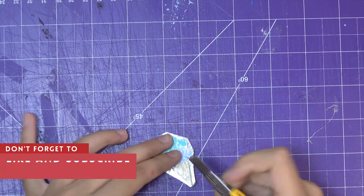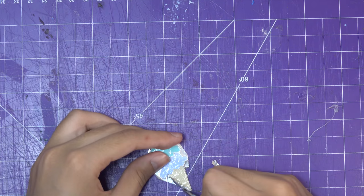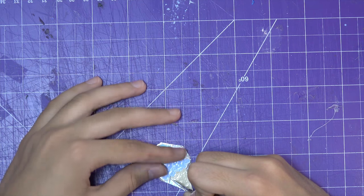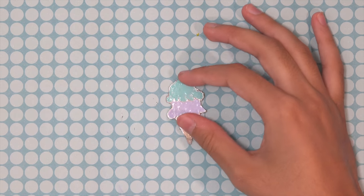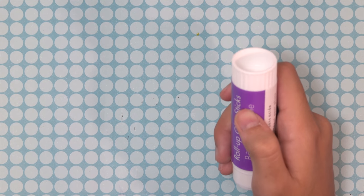I cut it slightly outside of those lines just so I can have like a little silver border around. And if your foil starts to peel off you can always use a glue stick to stick everything together.